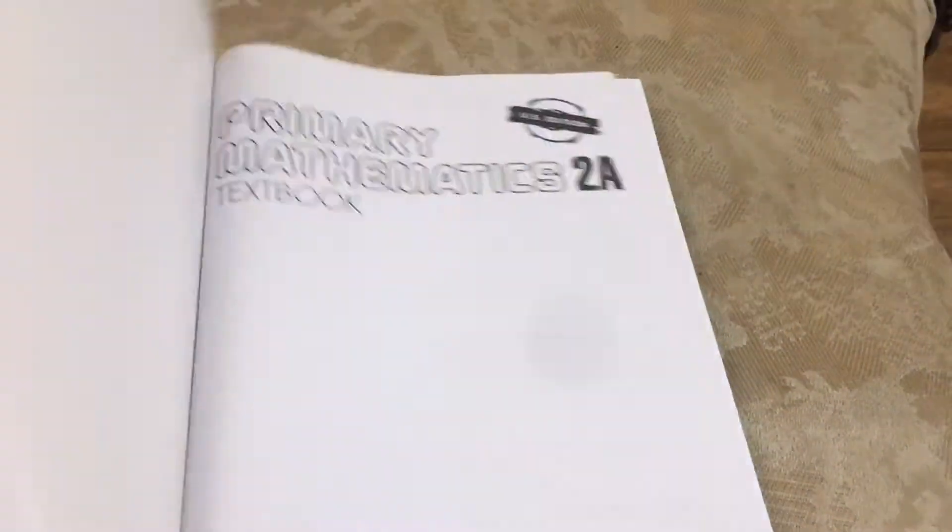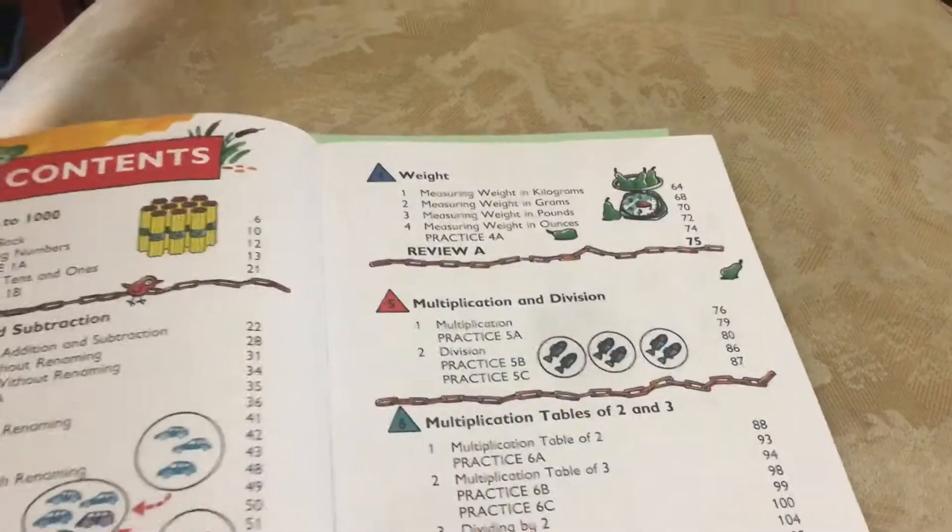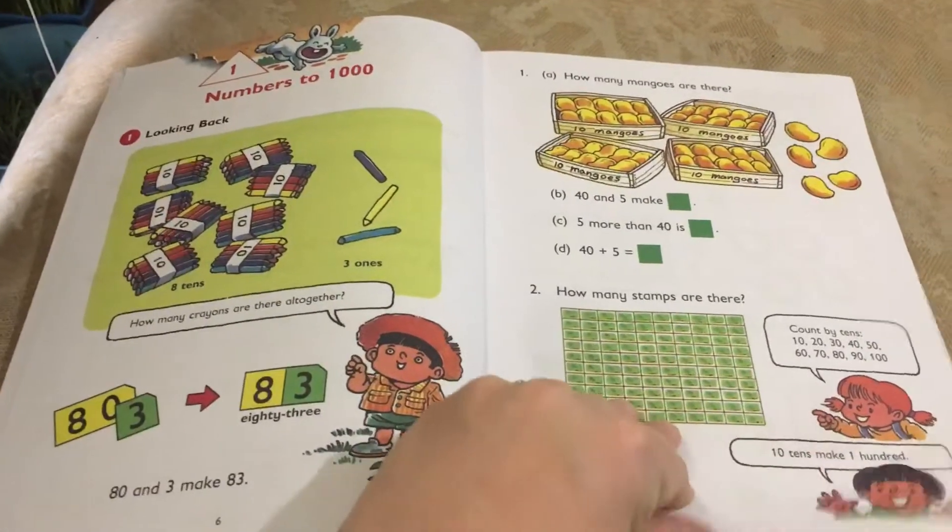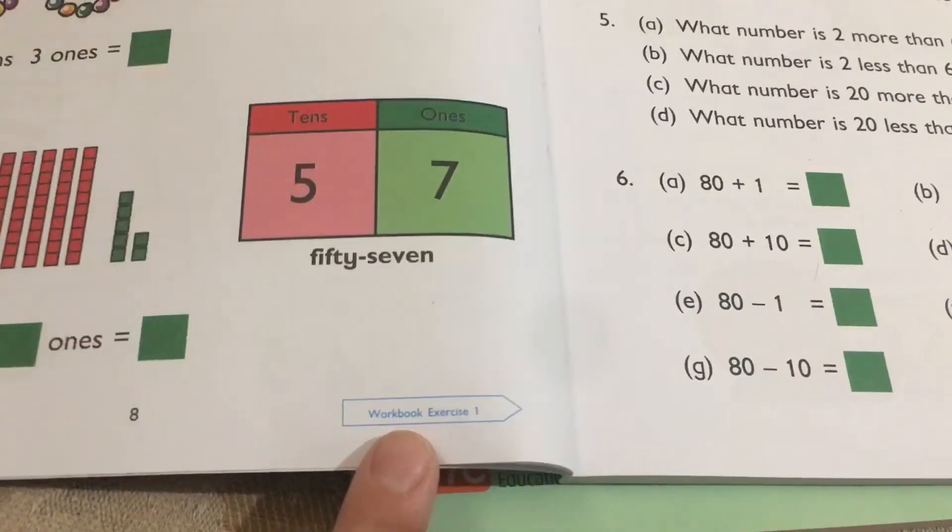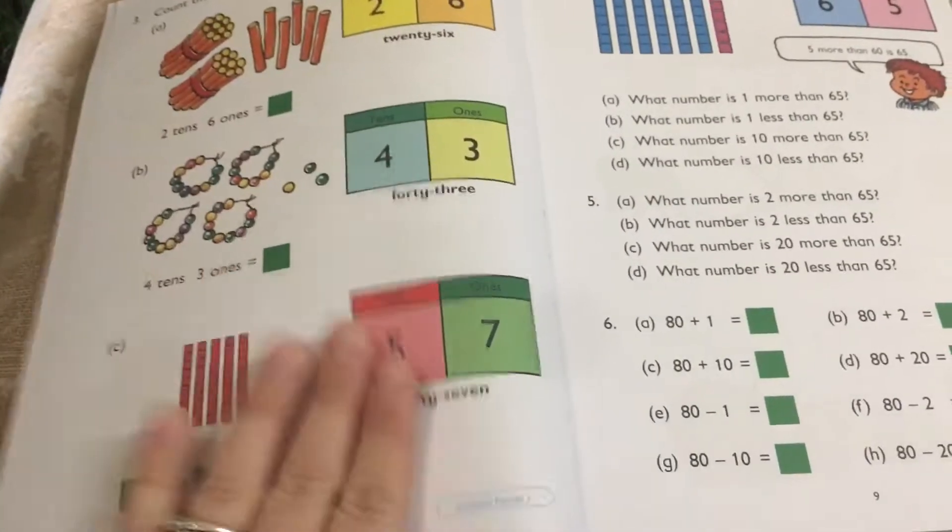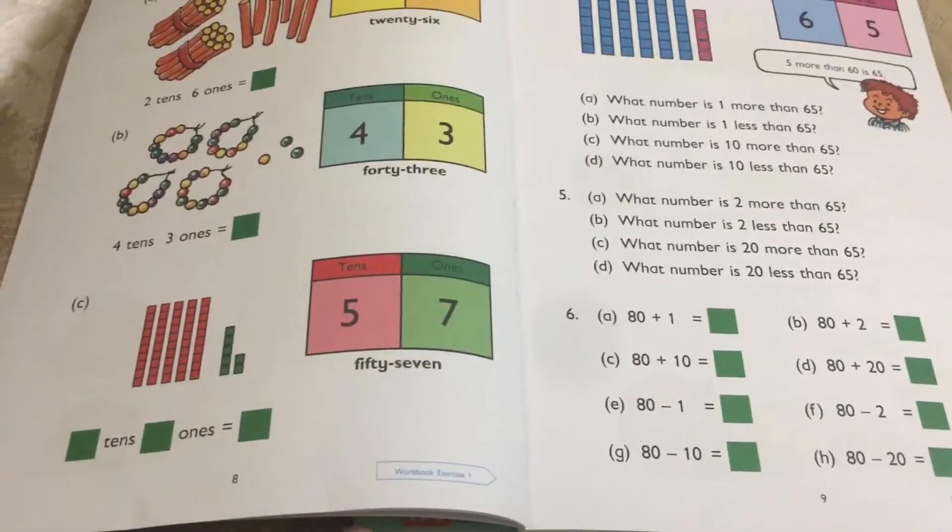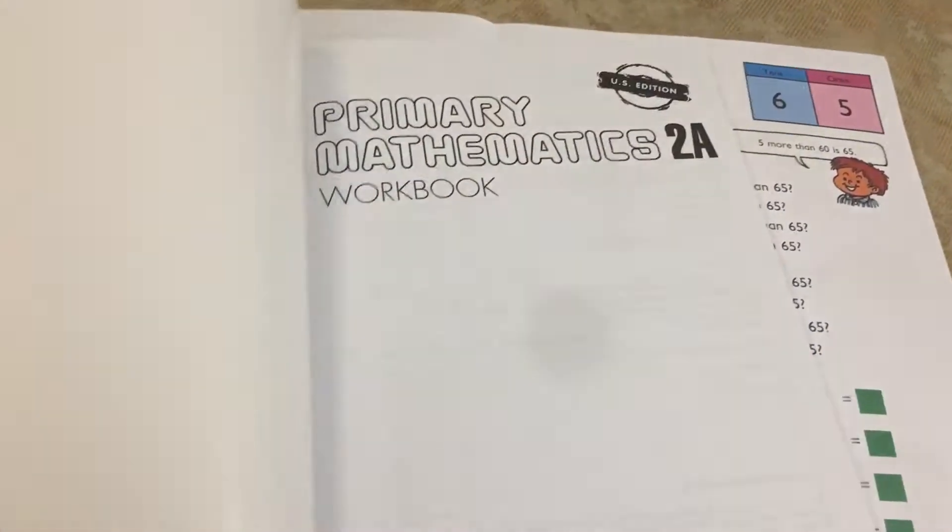So let's get started with the textbook first. I'm going to go back and show you the preface page, the table of contents, and all that good stuff. But I just want to show you right now how this correlates with the workbook. So right here you see it says workbook exercise 1. So this lesson, lesson number 1, correlates with the workbook exercise 1. I love that they put that in the bottom of the page. That way you see that right away. You don't have to go searching for it.